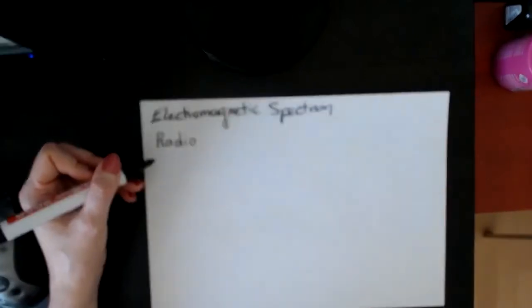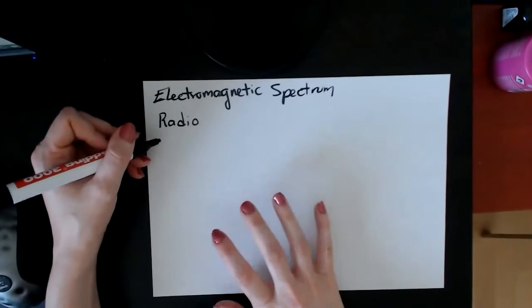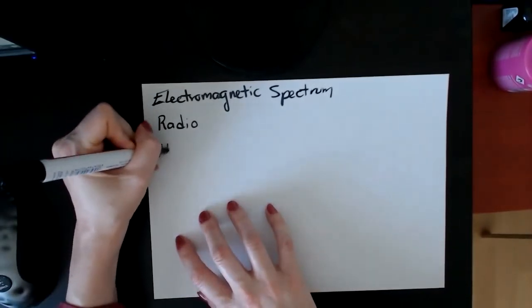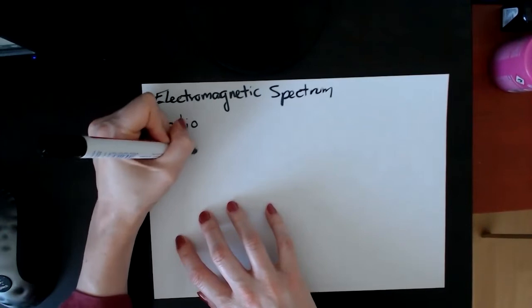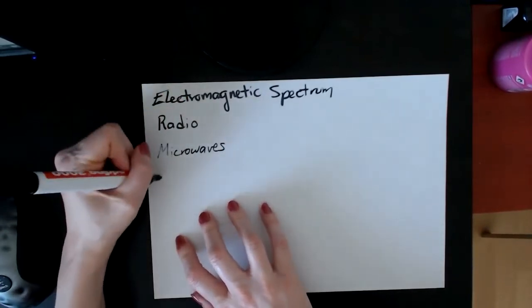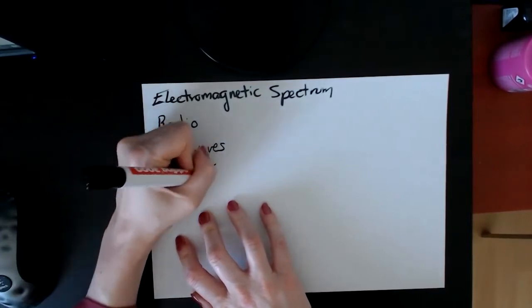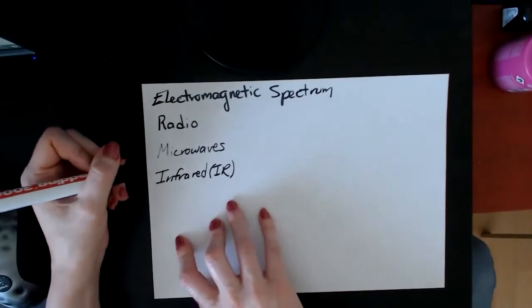There are seven parts to the electromagnetic spectrum, and I'm going to write them in a particular order like I did when I taught. So there's radio waves, then there's microwaves, then infrared waves, which is sometimes abbreviated IR, and you can just write that on the exam. That is acceptable.